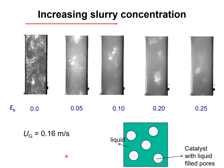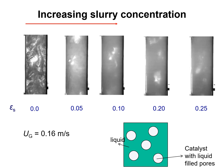Let's examine the influence of increased slurry concentration on bubble column hydrodynamics. We maintain the superficial gas velocity constant at 16 cm per second and look at the hydrodynamics with no suspended catalyst, with 5%, 20%, and 25% catalyst in the liquid phase. Starting with the gas-liquid system without catalyst, we have the heterogeneous flow regime with large bubbles going up through the center and finely dispersed small bubbles.